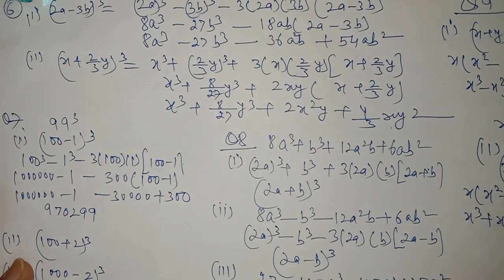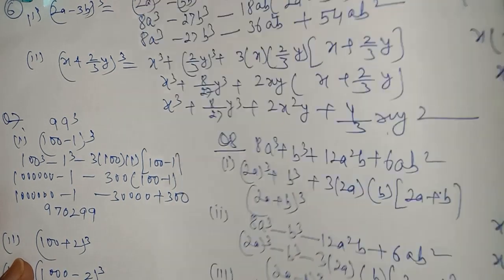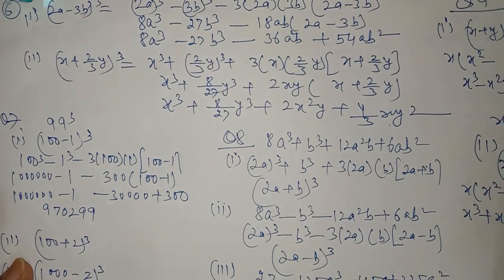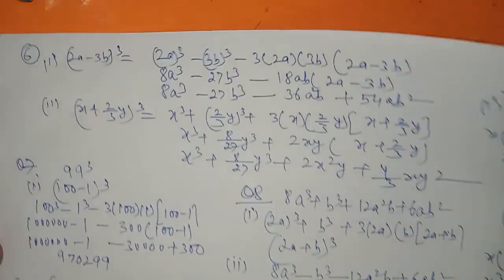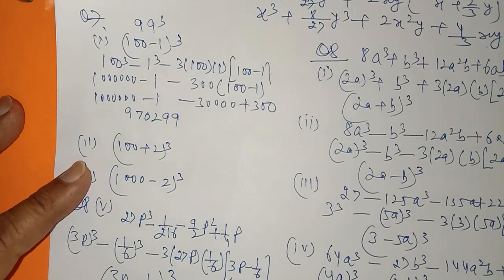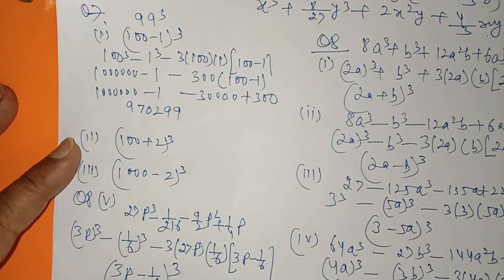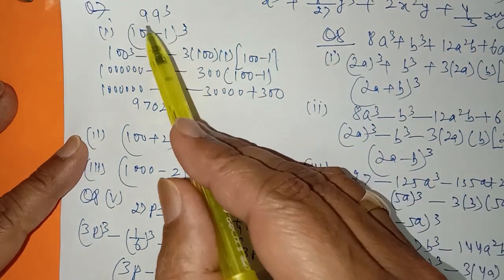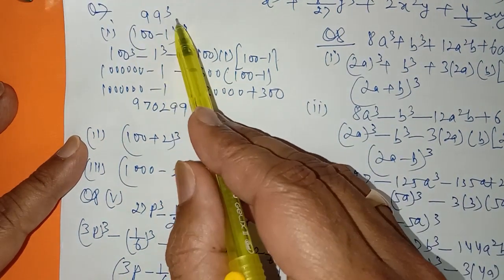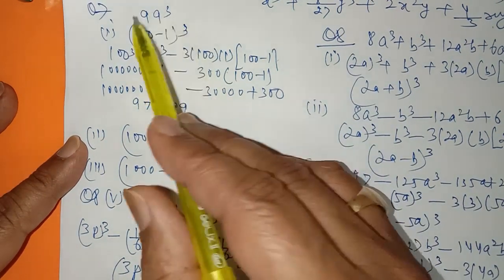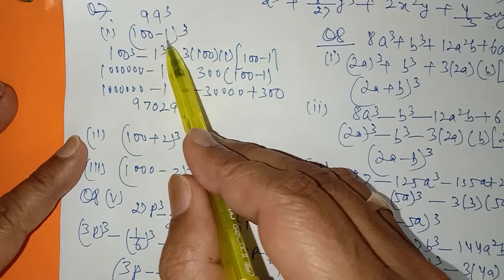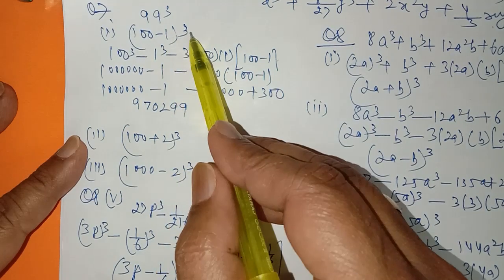We used the whole cube identity in question number 6, and we have to use the same identity in question number 7. To find the whole cube of 99, you can write 99 as (100 minus 1) whole cube.